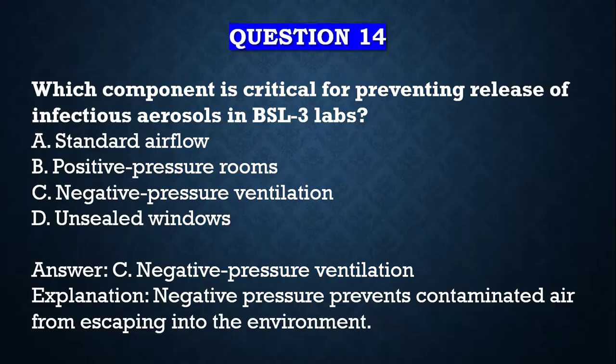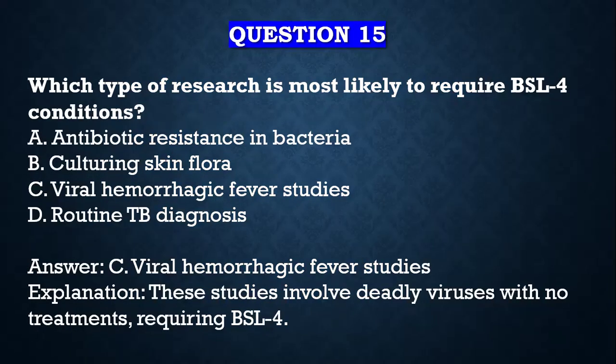Question number fourteen: which component is critical for preventing release of infectious aerosols in BSL3 labs? A) Standard airflow, B) Positive pressure rooms, C) Negative pressure ventilation, D) Sealed windows. Your answer is C, negative pressure ventilation. Negative pressure prevents contaminated air from escaping into the environment — that's why it's called directional airflow — air flows into the lab but does not flow out.